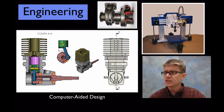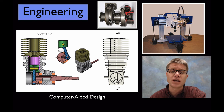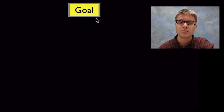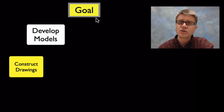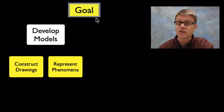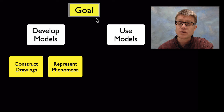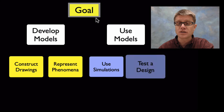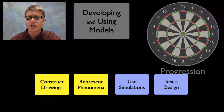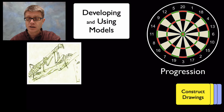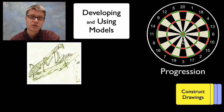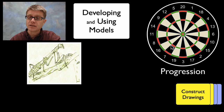Models are going to be physical, shared, clear understandings — really the manifestation of mental models. The goal in science education is to help students develop models. They do that first by constructing drawings and representing phenomena, then using those models through simulations, and also testing designs. Going back to the analogy of throwing darts at a dart board, we want students from the time they begin education to start developing and using models, refining those through the years and getting closer and closer to the bullseye, so that by senior year of high school they're really good at using models.